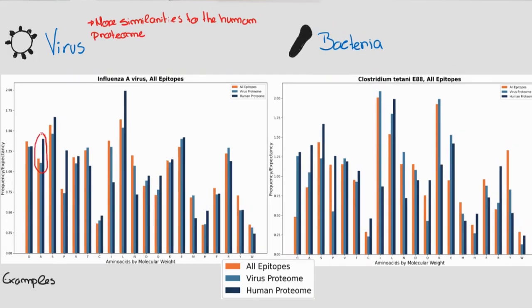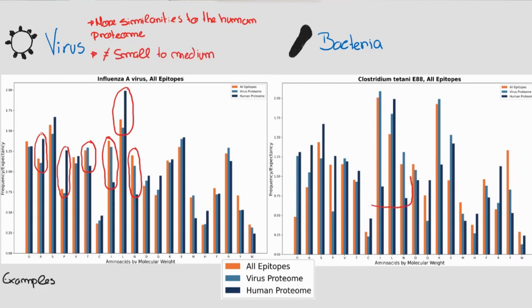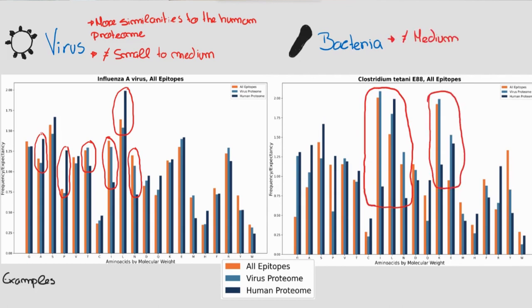Regarding the molecular weight, viruses differentiated themselves from the human proteome on the amino acids in the small to medium range of molecular weights, while bacteria were more inclined to use more amino acids in the medium molecular weight range.